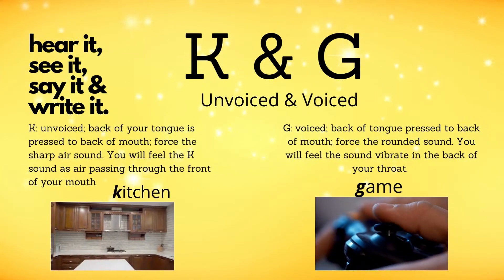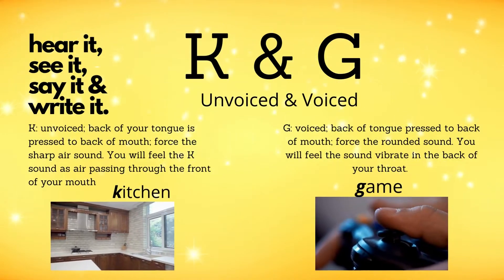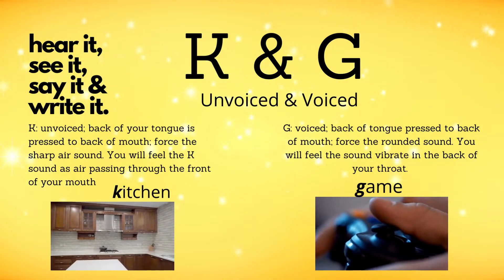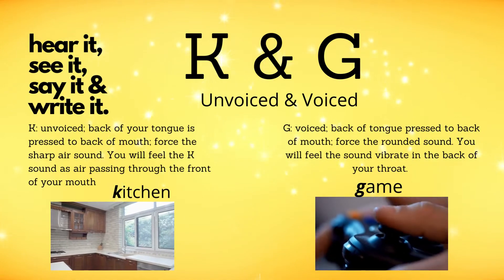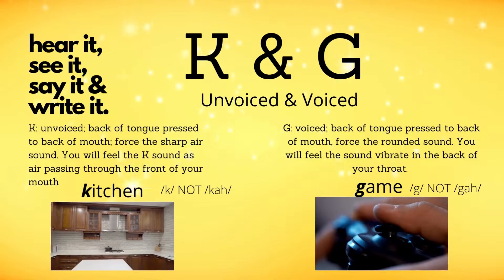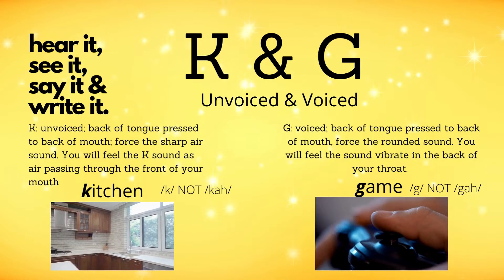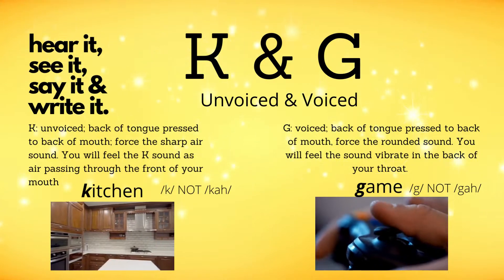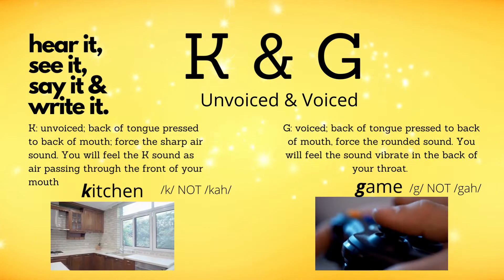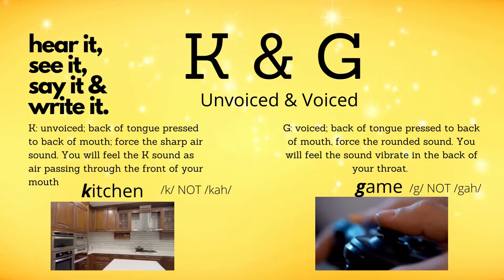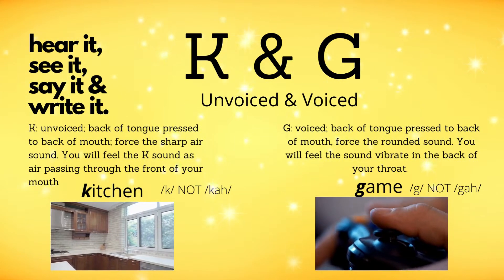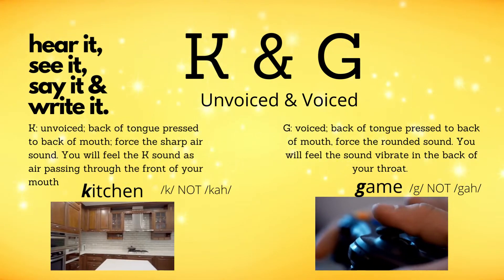K and G. K is unvoiced: the back of your tongue is pressed to the back of your mouth — force the sharp air sound. You will feel the K sound as air passing through the front of your mouth — K, as in the word kitchen. G is voiced: the back of the tongue is pressed to the back of the mouth. Force the rounded sound and you will feel it vibrate in the back of your throat — G, like game.